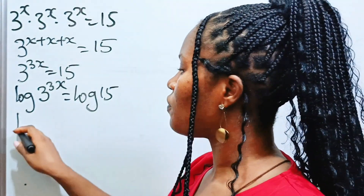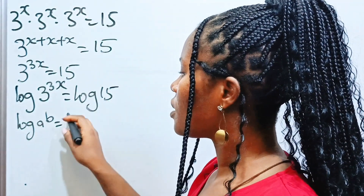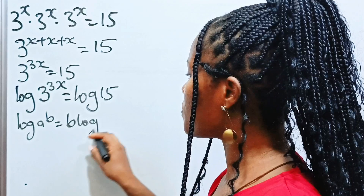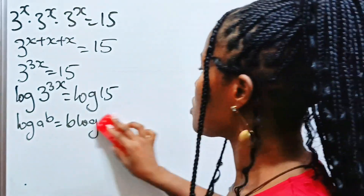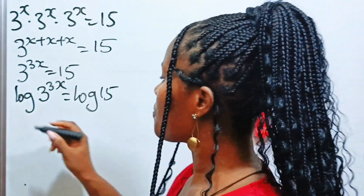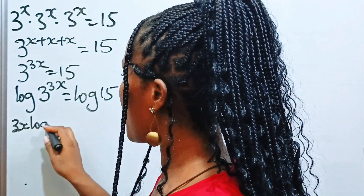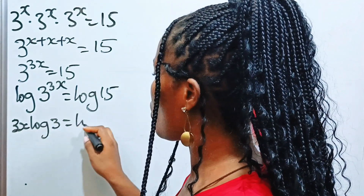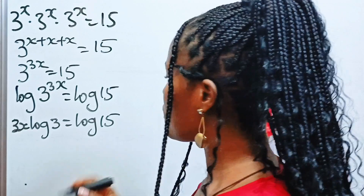When you have log of a raised to the power of b, it equals b multiplied by log a. So we can write this as 3x multiplied by log 3 is equal to log 15.